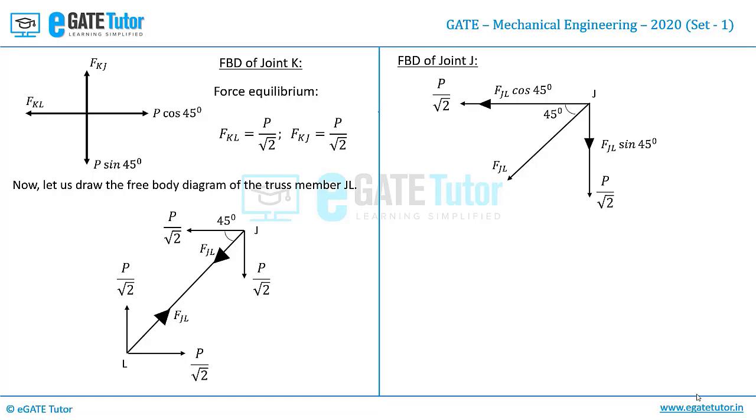Force FJL is also resolved as FJL cos 45 towards left and FJL sin 45 towards down. Here when we try to apply the force equilibrium we get FJL equals minus P. The maximum possible force which is exerted on the member JL is minus P. The maximum possibility is that the member JL will buckle first.